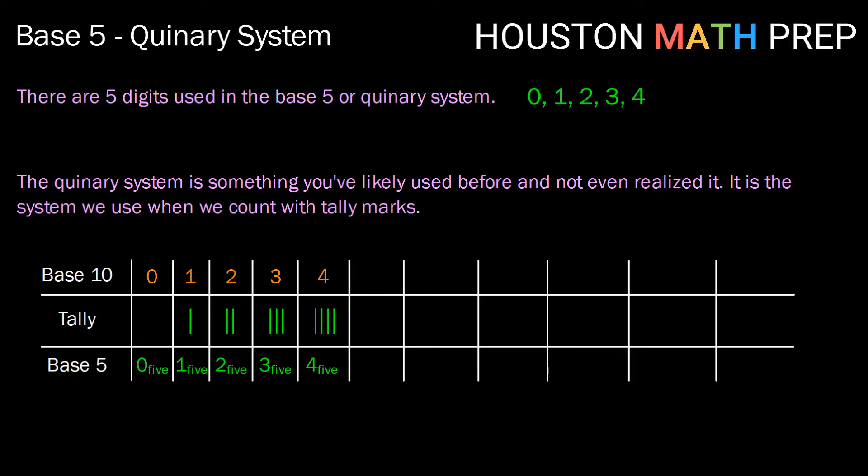When we get to 5, though, we ran out of digits. In the tally system, we would usually put a diagonal mark through that group of 4 to notate now this is a group of 5. So since we no longer have a digit to work with, we're counting now how many groups of 5 do we have? Well, we have 1 group of 5 and 0 groups of 1. So by moving to the next place value over, we're now counting groups of 5 and groups of 1.